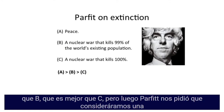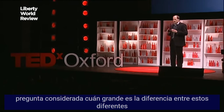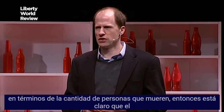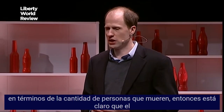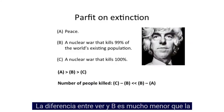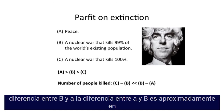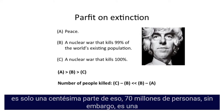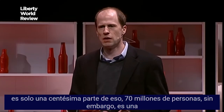But then Parfit asks us to consider a different question: how big is the difference between these different scenarios? If we ask how big the difference is in terms of the number of people killed, then the difference between C and B is much smaller than the difference between B and A. The difference between A and B is, in today's terms, almost 7 billion people, whereas the difference between B and C is just one hundredth of that — 70 million people.